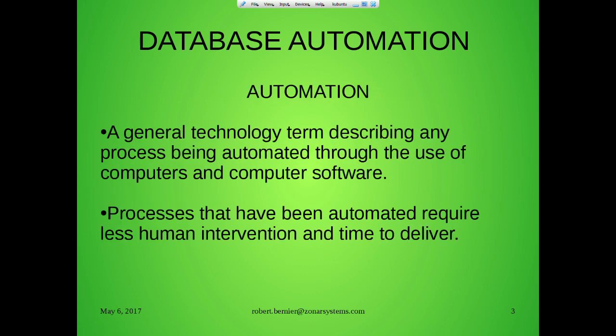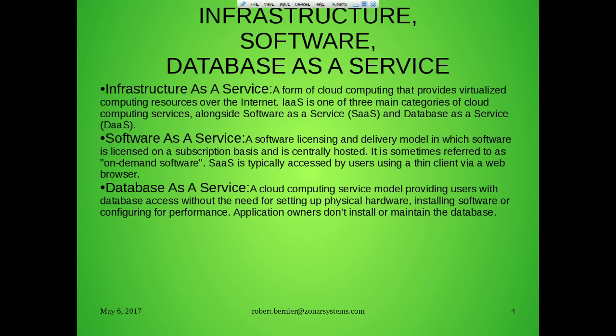General definition: automation is basically something that makes things go fast and simply — a lot of moving parts but encapsulated and simpler. Here are our definitions: infrastructure as a service, software as a service, database as a service — the idea of simplifying things.